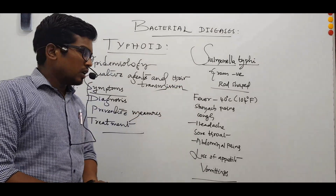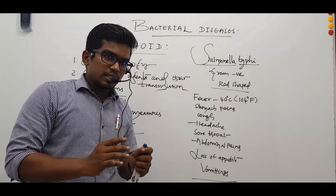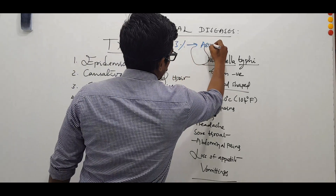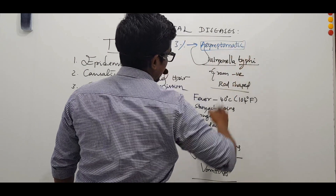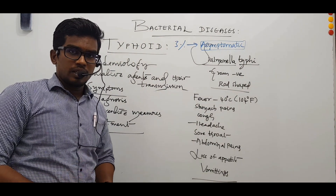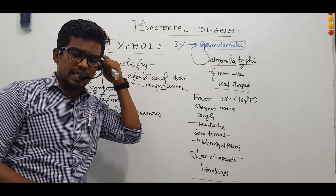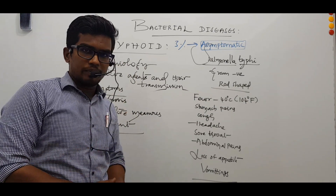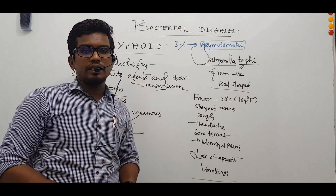Around three percent of people infected with typhoid later become asymptomatic, meaning they do not show any symptoms but carry the bacteria in their feces for many years, spreading the disease. Furthermore, people who are infected and do not wash their hands properly can definitely infect many others through contaminated fingers.